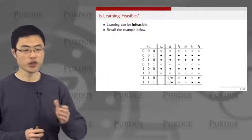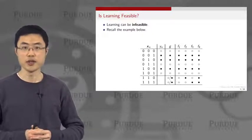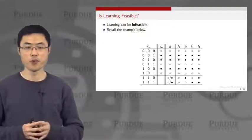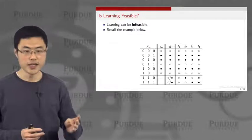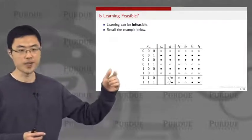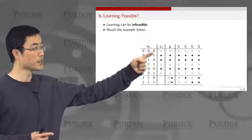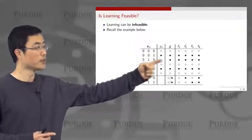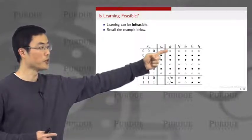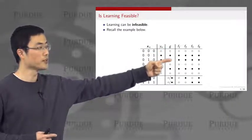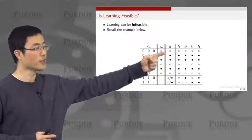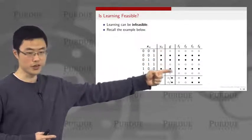These two testing cases do not appear in the first six cases and we don't have their labels. On the right-hand side of this diagram, you can see that we have four possible target functions. These target functions have labels where the first row would be all 0s, the second one all 1s, and so on.